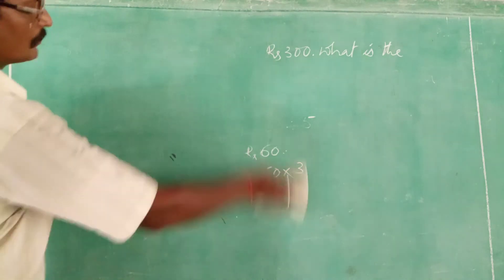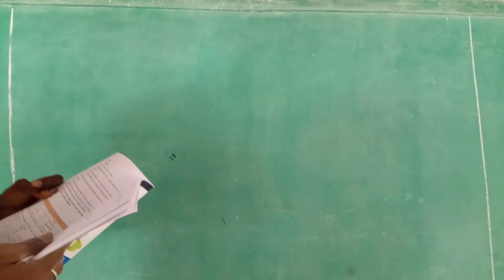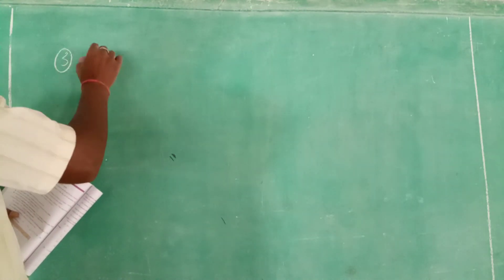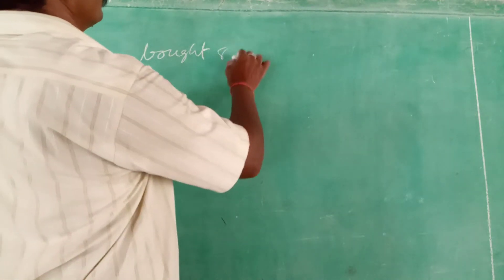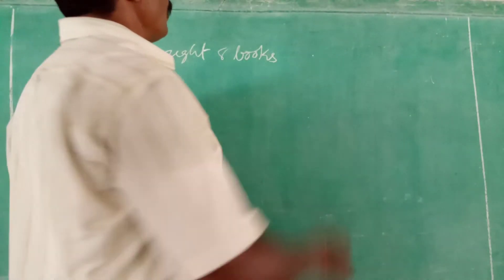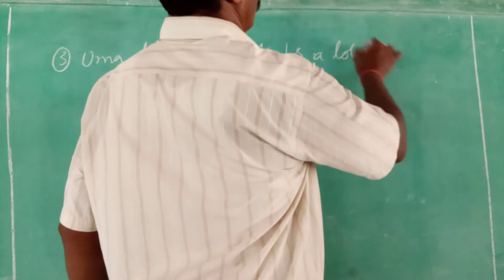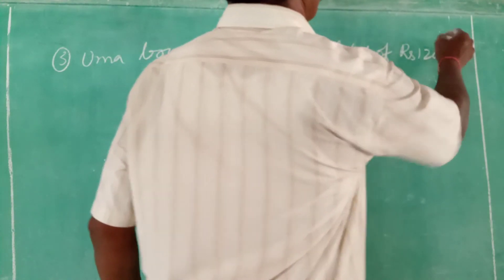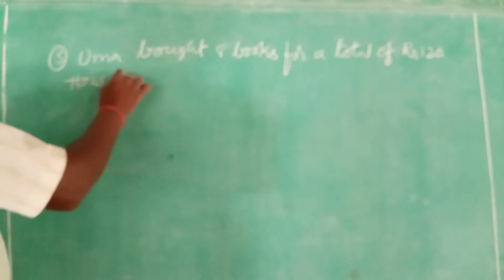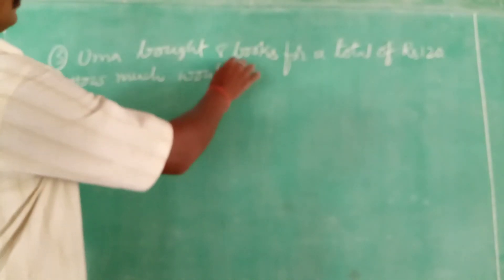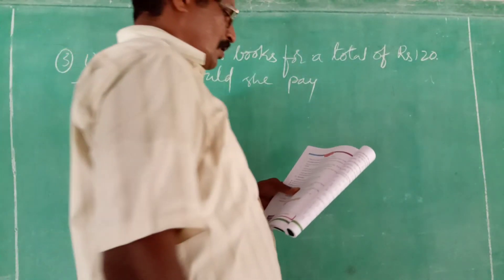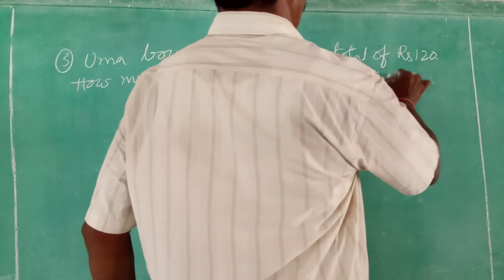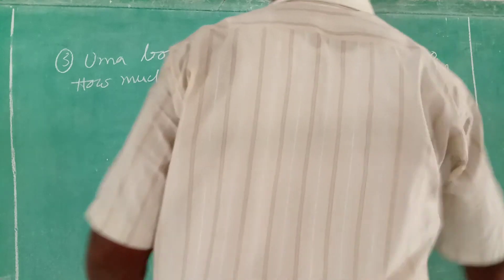Next question. Uma bought 8 books for a total of Rs. 120. How much would she pay for just 5 books? This is the question.